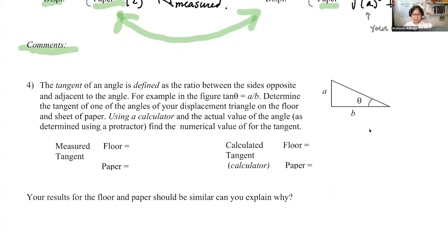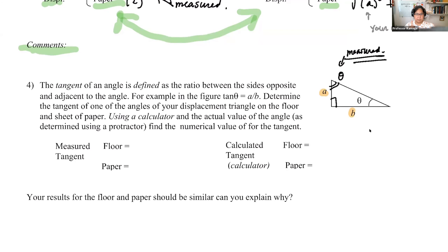Number four is discussing the angle. The tangent of an angle is defined as the ratio between the side opposite and adjacent to the angle. Making sure: this is the triangle you measured. Use the correct A and the correct B values.